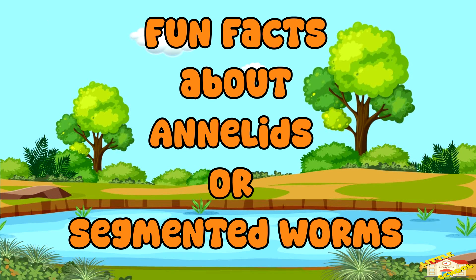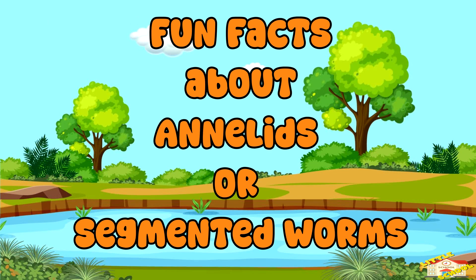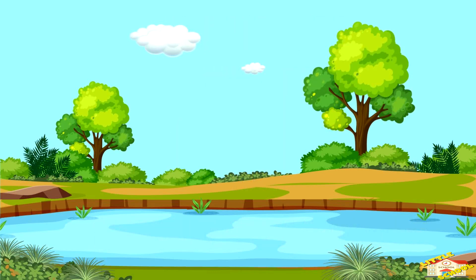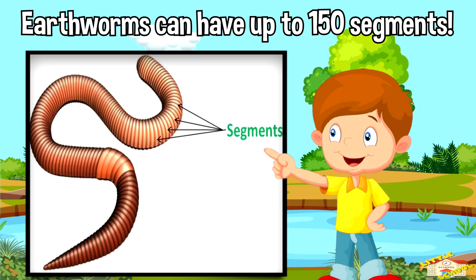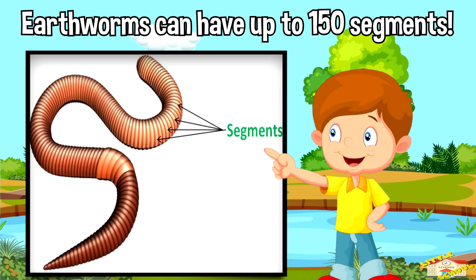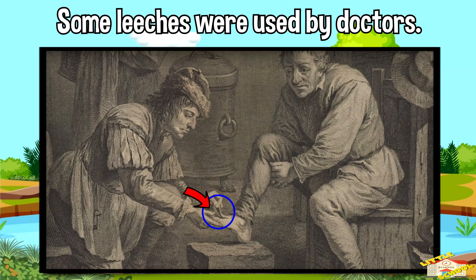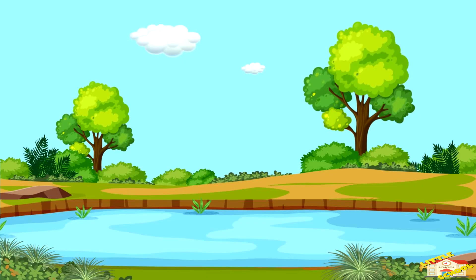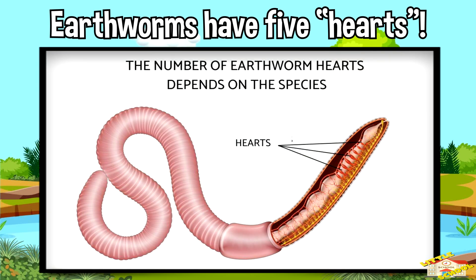Now here are some fun facts about annelids or segmented worms. Earthworms can have up to 150 segments in their body. Some leeches were used by doctors in ancient times to treat sickness. Earthworms have five hearts, but they're actually five pairs of special blood vessels.